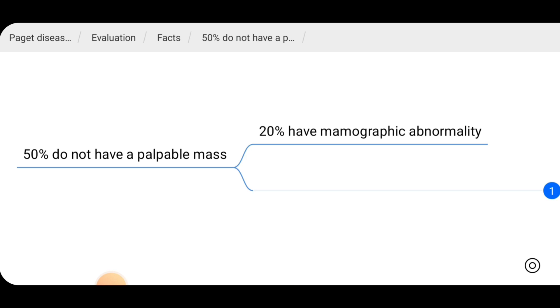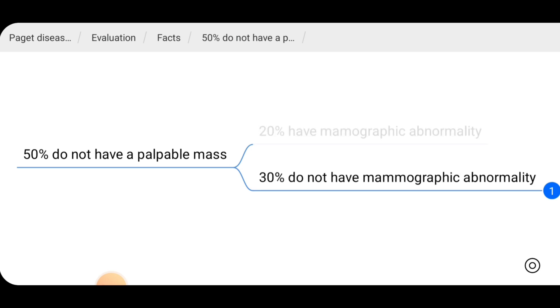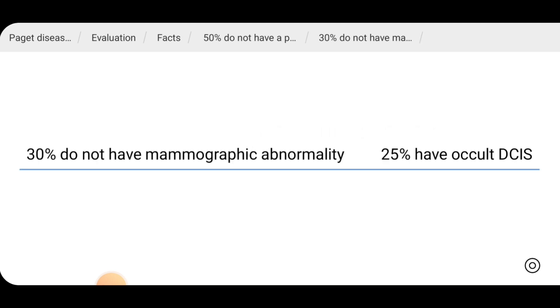And the other 50% usually do not have a palpable breast mass. However, 20% of them have mammographic abnormality. In mammogram, there is a lesion. 30% of them do not have mammographic abnormality.